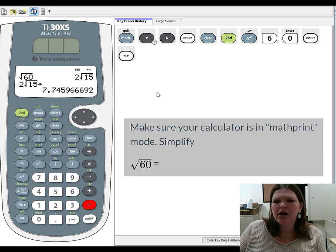And we can see that 2 square root of 15 is about 7.7. But you can see it's a long, ugly, nasty decimal. That's why mathematicians prefer it as a simplified radical.